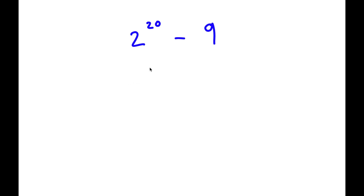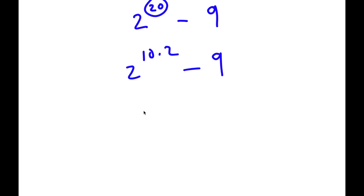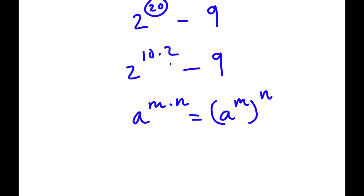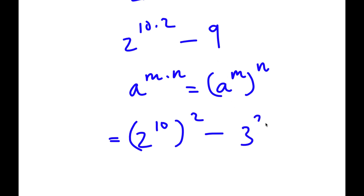In this problem, I have 2 to the power of 20 minus 9. I'm going to rewrite 20 as 10 times 2, giving 2 to the power of 10 times 2. Using the rule a to the power of m times n equals a to the power of m to the power of n, that becomes 2 to the power of 10 to the power of 2. Then I rewrite 9 as 3 squared.